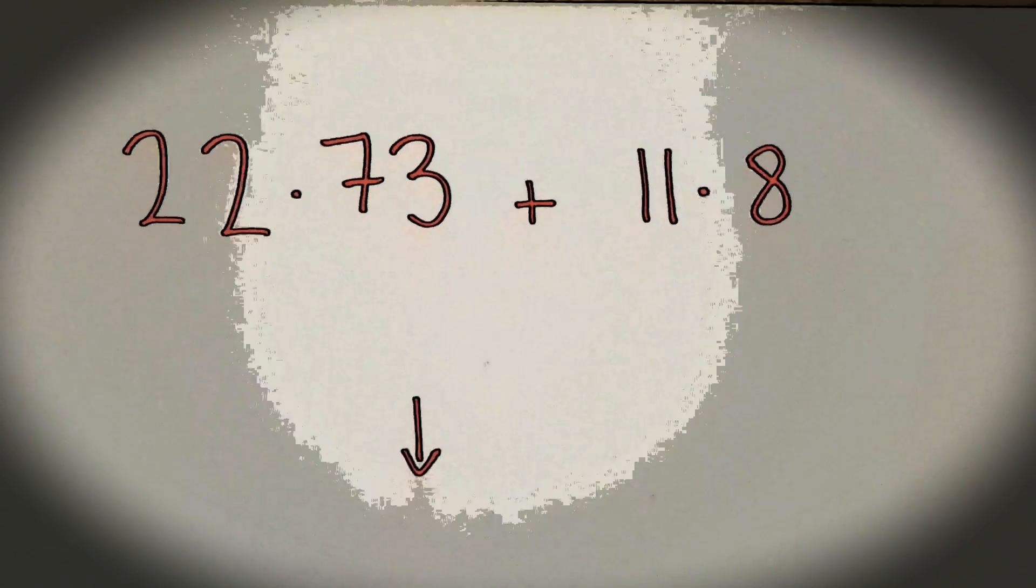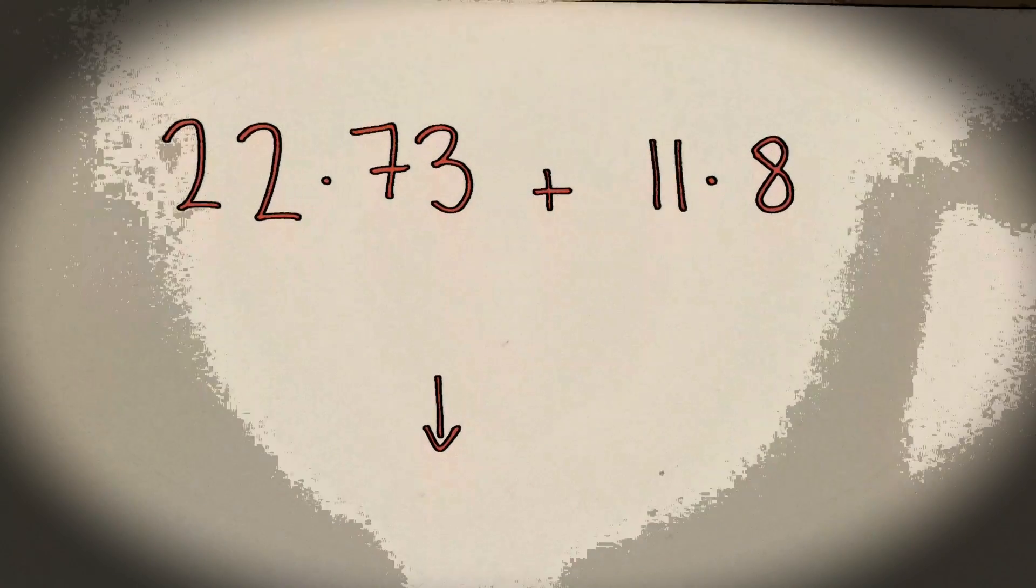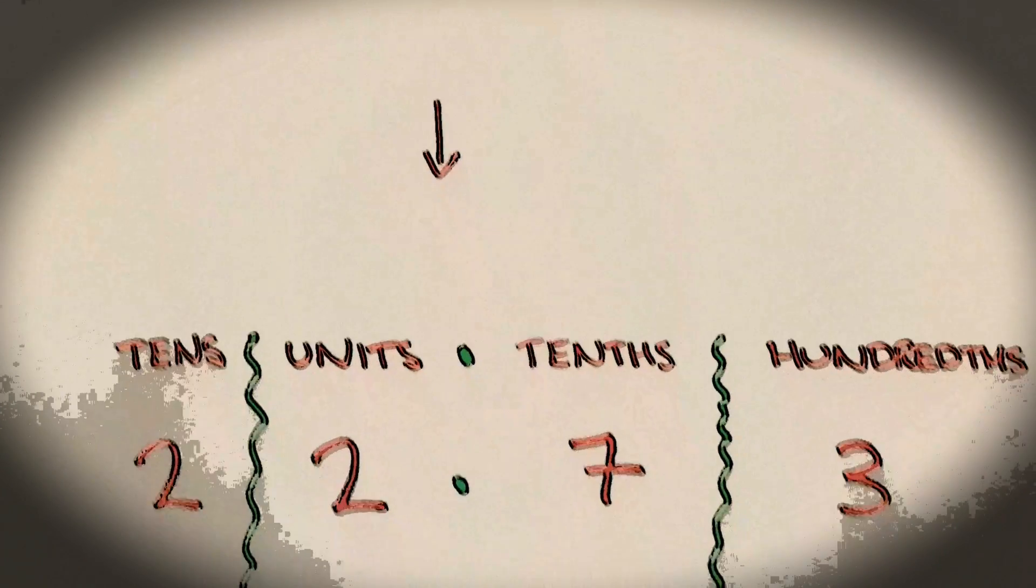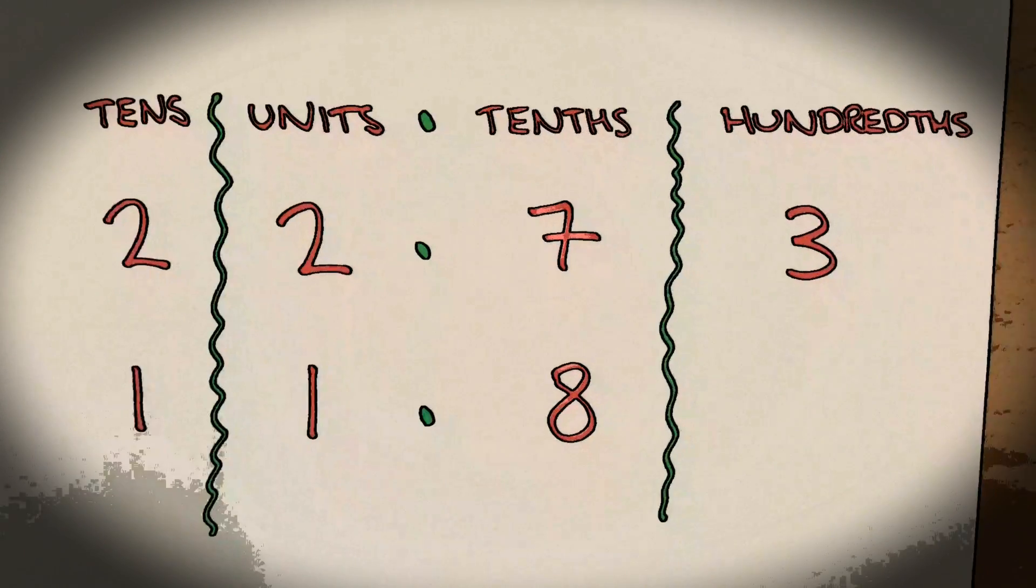22.73 plus 11.8. The first step is to put the numbers in the right columns, and then we'll do the column addition.